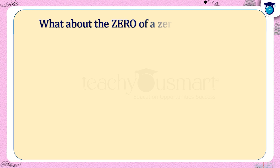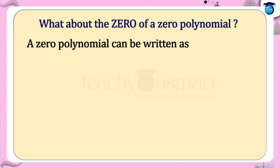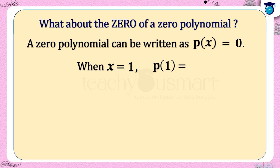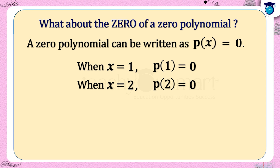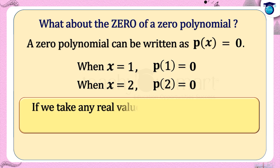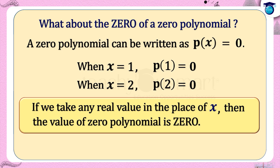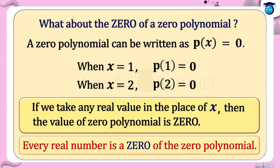What about the zero of a zero polynomial? A zero polynomial can be written as p(x) = 0. When x equals 1, p(1) = 0. When x equals 2, p(2) = 0, and so on. That is, if we take any real value in the place of x, the value of the zero polynomial is 0. So we can say that every real number is a zero of the zero polynomial.